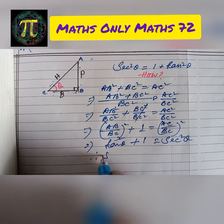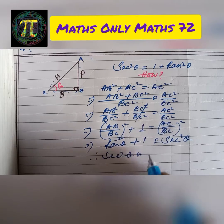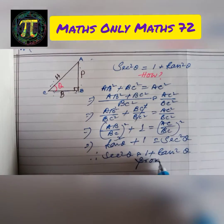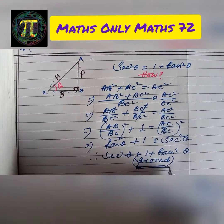So we get sec squared theta equals 1 plus tan squared theta. Proved.